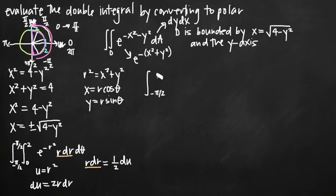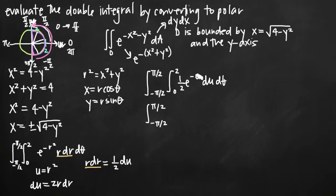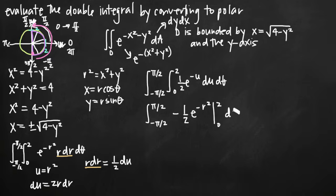So let's rewrite our integral: the outer integral goes from negative pi over 2 to positive pi over 2, and the inner integral from 0 to 2. We have e to the negative u, and r dr we substitute with one half du, pulling the one half to the front — giving us one half times the integral of e to the negative u du dθ. Integrating e to the negative u, we divide by the coefficient on u, which is negative 1, giving negative one half e to the negative u. Back-substituting u equals r squared, we evaluate negative one half e to the negative r squared on the interval 0 to 2.